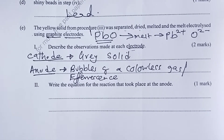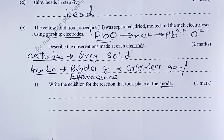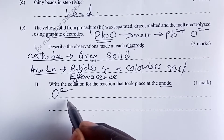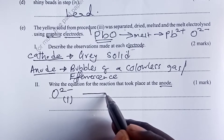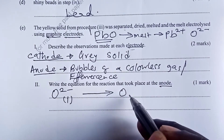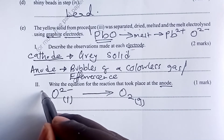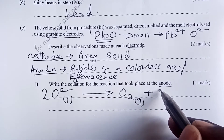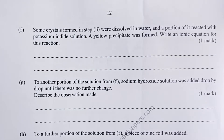For Part E part 2, we write the equation for the reaction at the anode. At the anode, oxide ions in the liquid state are discharged. The half-equation is: 2O²⁻(l) → O₂(g) + 4e⁻.